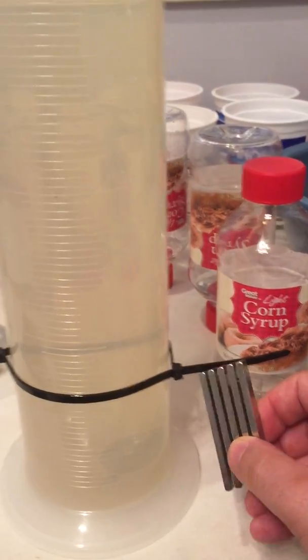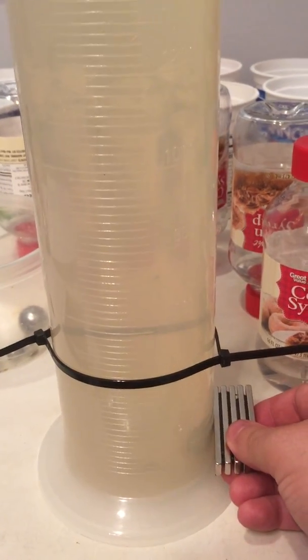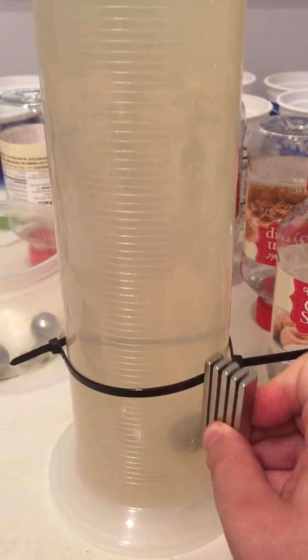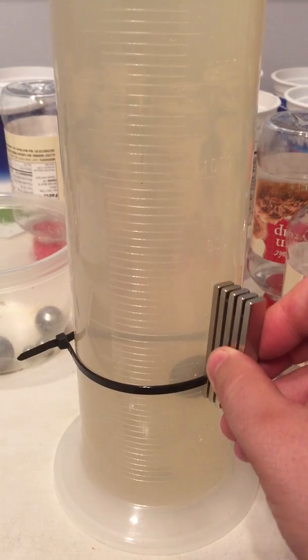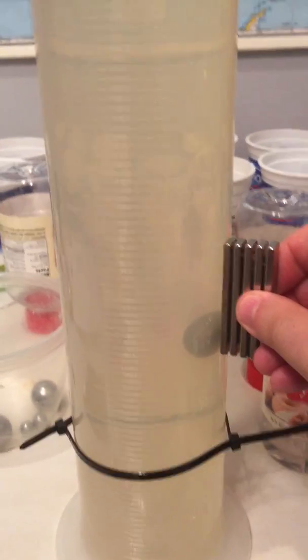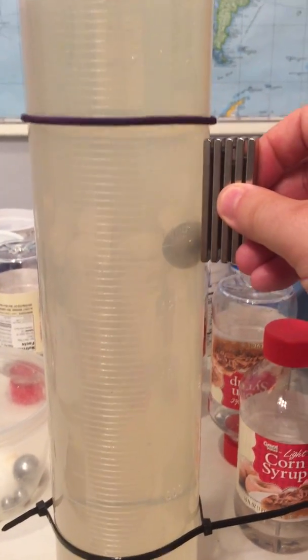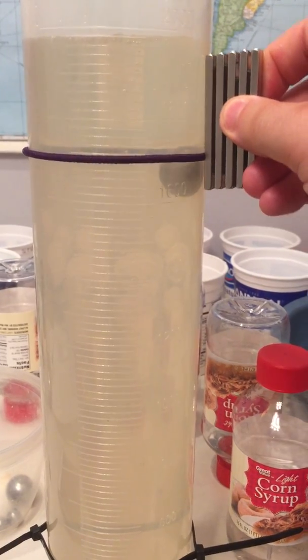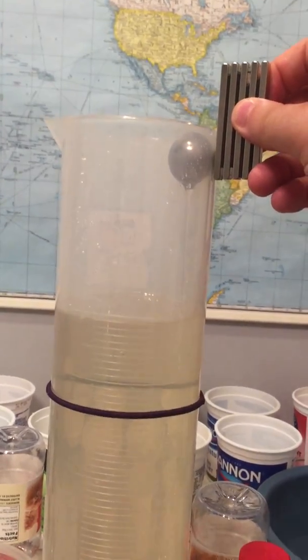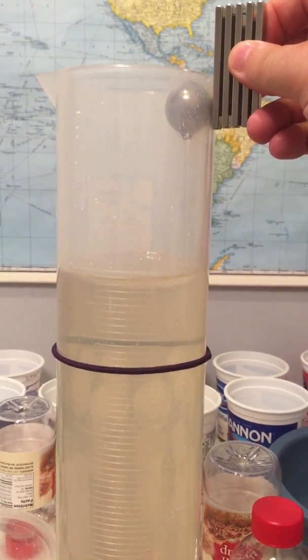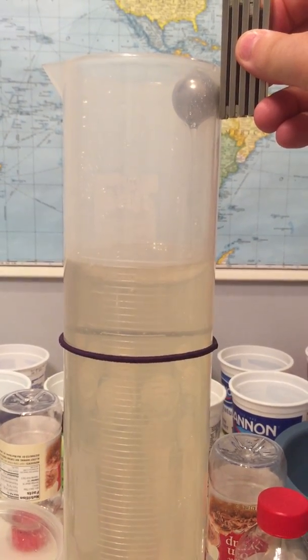Anyway, the way that I fish the sphere out is I use a neodymium magnet. So we'll use a neodymium magnet here to attract the sphere and lift it out of my corn syrup, like so.